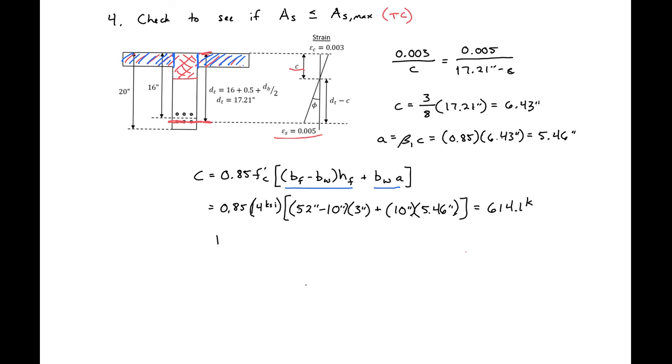We can then set t equal to our compression force and we know our t is equal to a s max times fy equal to our compression force, and then we can solve for our a s max. So a s max equals 614.1 kip divided by 60 ksi steel, which gives us an a s max of 10.24 square inches. We can check this a s max versus our a s provided to see if we're still tension controlled in our section, and in this example we indeed are still tension controlled.